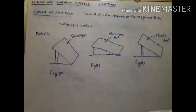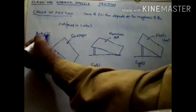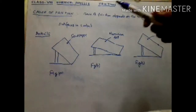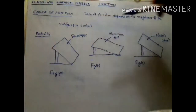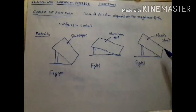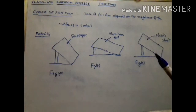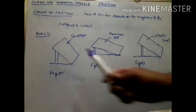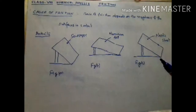Now we have to do an activity. We take four wooden trays. One is covered with sandpaper, another is aluminium foil, and the third one is with a plastic sheet. Now we take a mesh box and put it on the first tray covered with sandpaper.